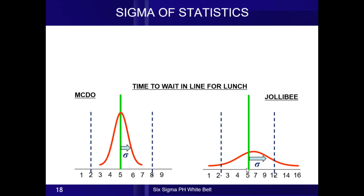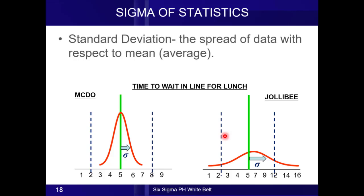Now factoring both averages and standard deviation, where will you go? The answer is you will go to McDonald's, because the McDonald's process is more consistent. Standard deviation is the spread of data with respect to the average. The spread of data for McDonald's is just within three to seven minutes, while for Jollibee, the average is also five minutes but the spread of data, or the variation, is bigger — within one to 16 minutes. We will prefer McDonald's because its process is more consistent.